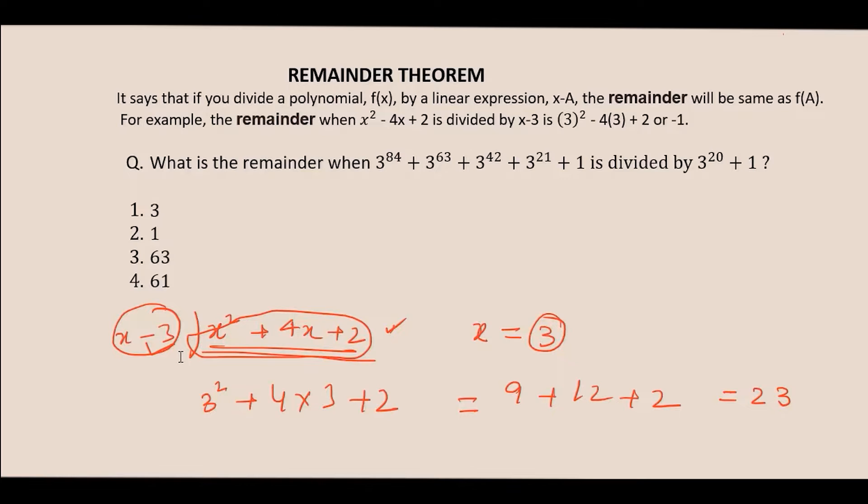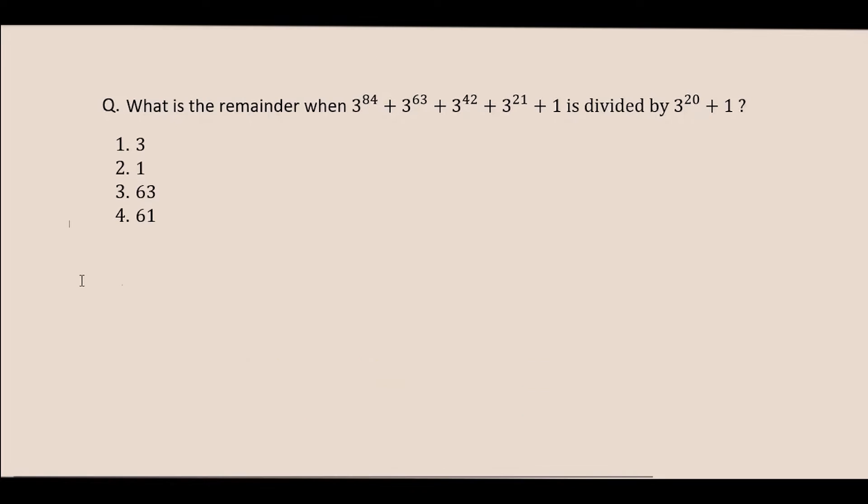So that would be the remainder. As here in the explanation of this theorem, it is given that x squared minus 4x plus 2 is divided by x minus 3. Just put the value of x as 3 in the equation and you would get minus 1 as the remainder. So now we will discuss our problem.